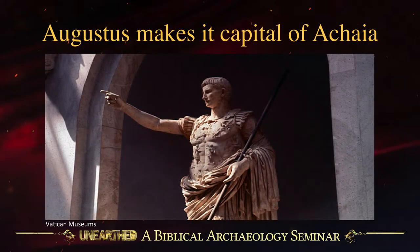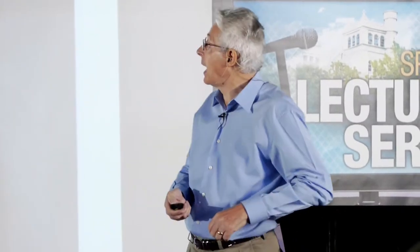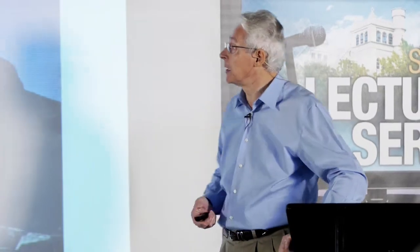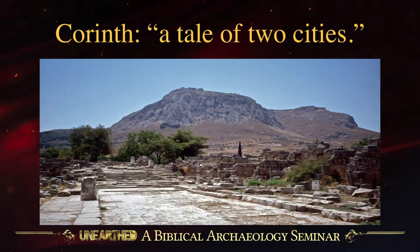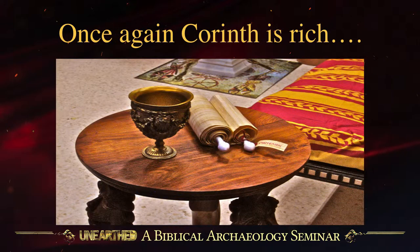Augustus made Corinth the capital of the province of Achaia, because the Romans, having taken Greece, divided it into provinces under their own administrative system. Achaia was one of those provinces, and its capital was Corinth — obviously the place where the boats went in and out, where there were communications. That's where you want your capital to be. So it is indeed a tale of two cities.